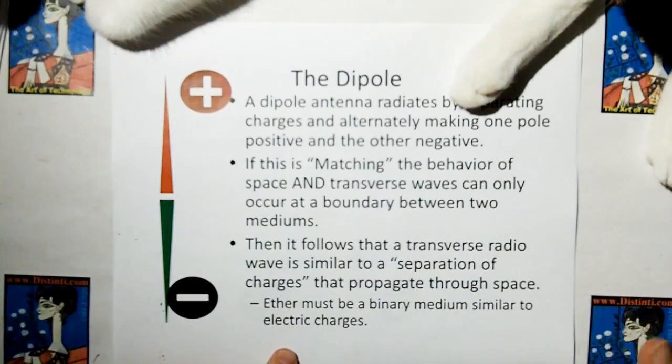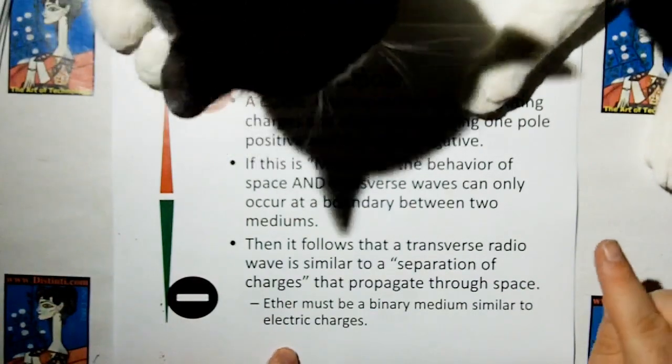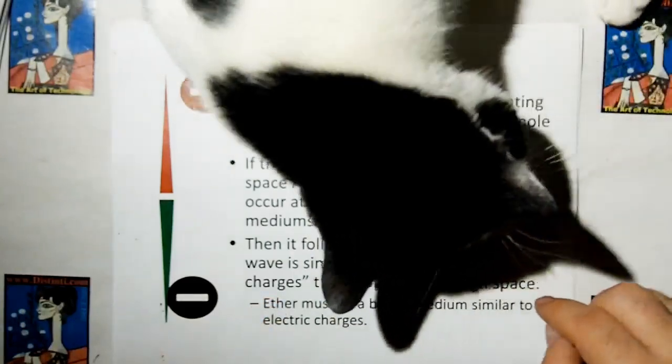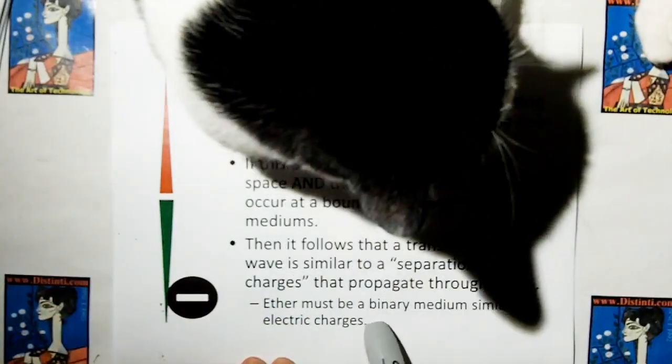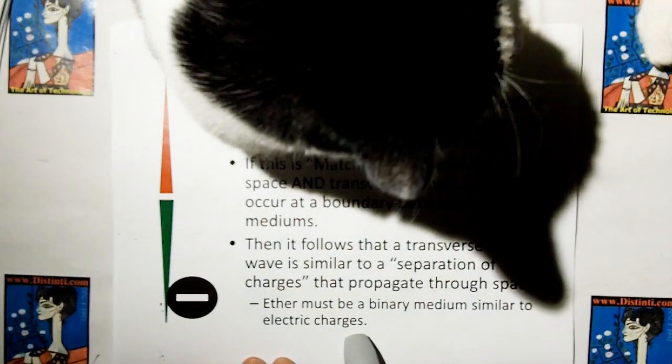then it follows that a transverse radio wave is similar to a separation of charges that propagate through space. So, therefore, we have to conclude the ether must be a binary medium similar to electric charges.